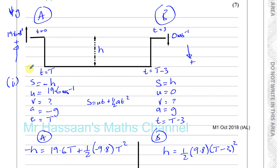I always follow the same convention in mechanics questions: the direction in which something is initially moving, I take as positive. That's why I took up as positive for A, and down as positive for B. You also have to be very careful about the meaning of S in the SUVAT equations — S does not mean the distance travelled. S means the displacement, so the sign is very important, and it only refers to how far it is from its initial position, not the total distance moved.